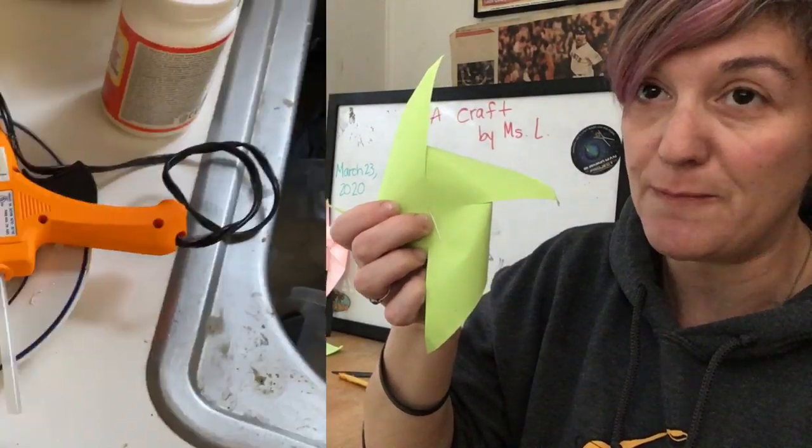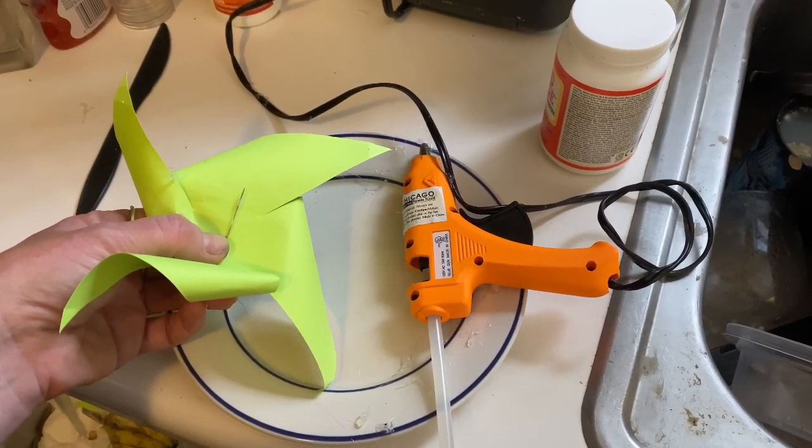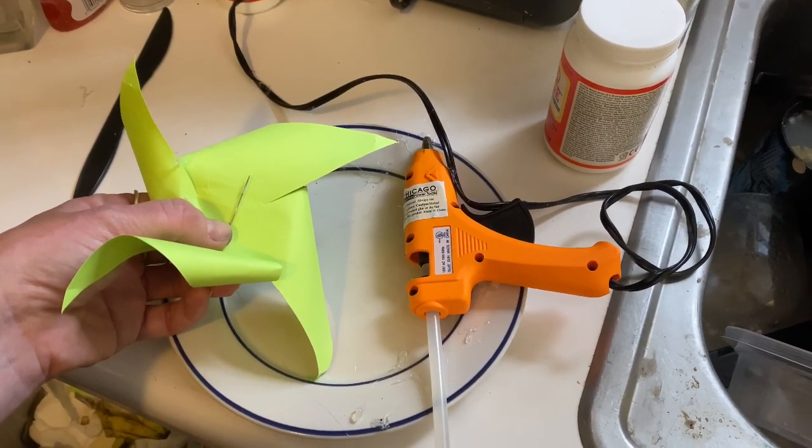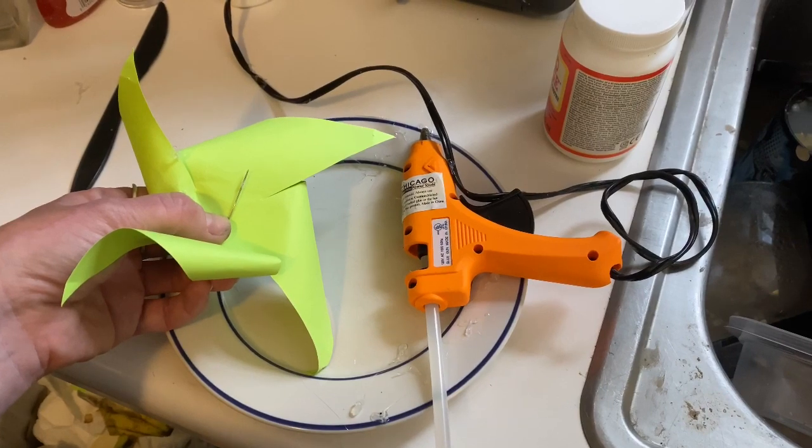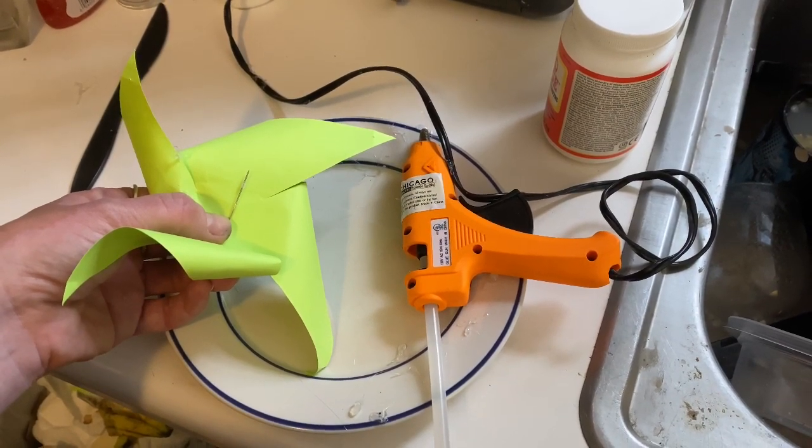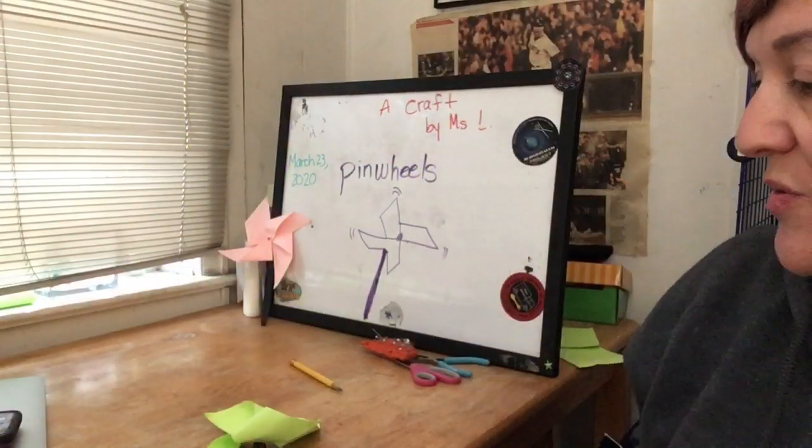Now what I'm going to do is use a glue gun and put a little strip of glue on the metal right above my thumb. The important part is to make sure that you do not stick the metal to the paper, otherwise it will not spin.